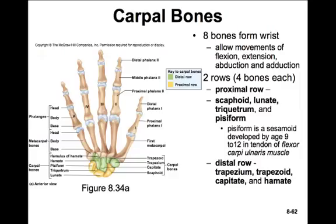There's a mnemonic for remembering the carpal bones — starting in the proximal row from thumb side to pinky side, then the distal row thumb side to pinky side: 'Some Lovers Try Positions That They Can't Handle.' That gives you scaphoid, lunate, triquetrum, pisiform, trapezium, trapezoid, capitate, hamate. That should help you remember all of those.